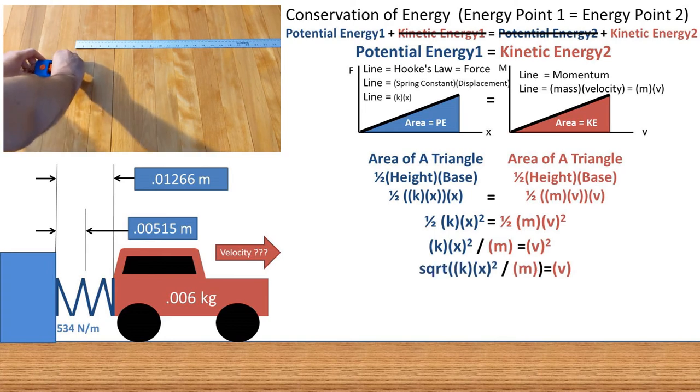Next, we can take the square root of both sides. This leaves us with the square root of k spring constant times the x or displacement of the spring squared divided by the mass of the car of 0.006 kilograms equals the velocity upon leaving the spring.